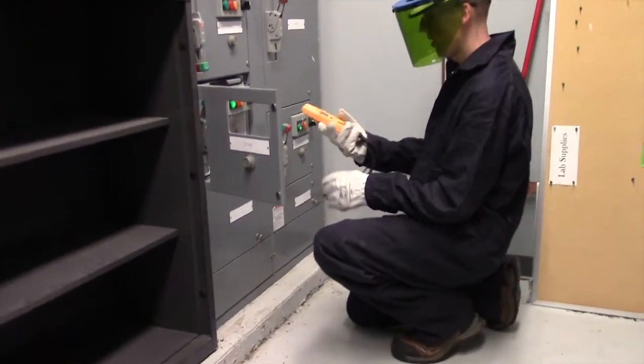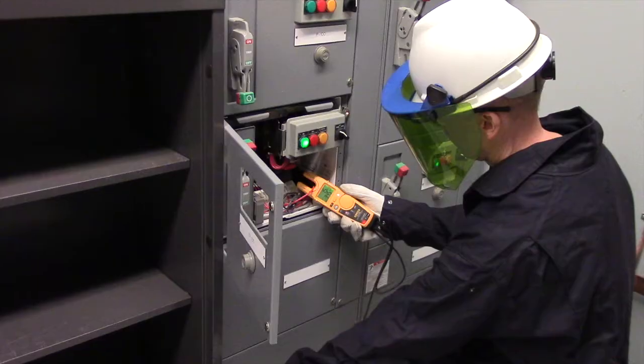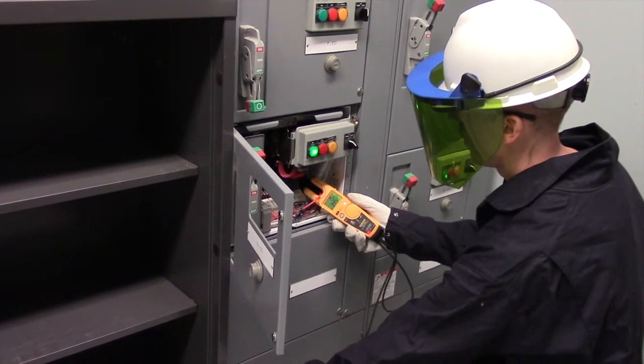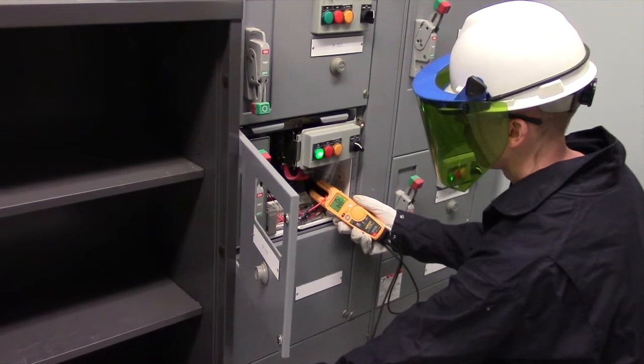We do that by removing the black probe. If you have a good ground, the screen will go green and you'll get the current readings on top and voltage on the bottom.